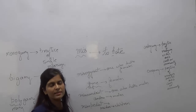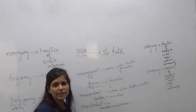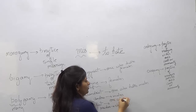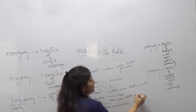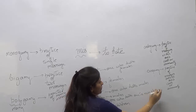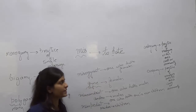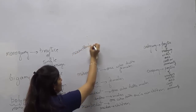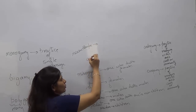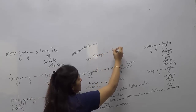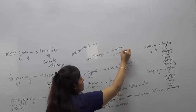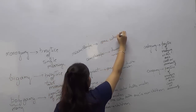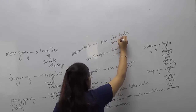The next word is 'misopedist' — one who hates children. Specifically, one who hates one's own children is called a misopedist. One more word: 'misanthrope'. 'Anthrope' means human or mankind. So those who hate mankind are called misanthropes — one who hates mankind.